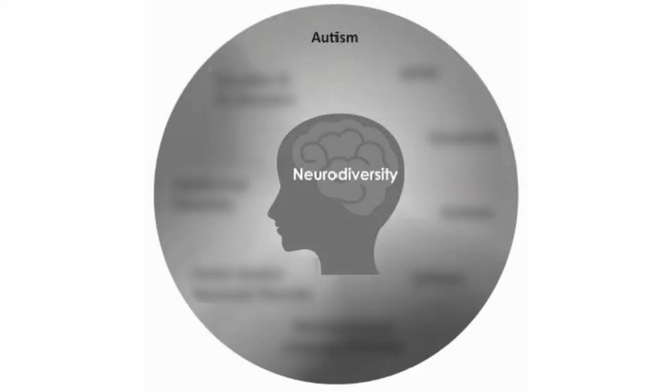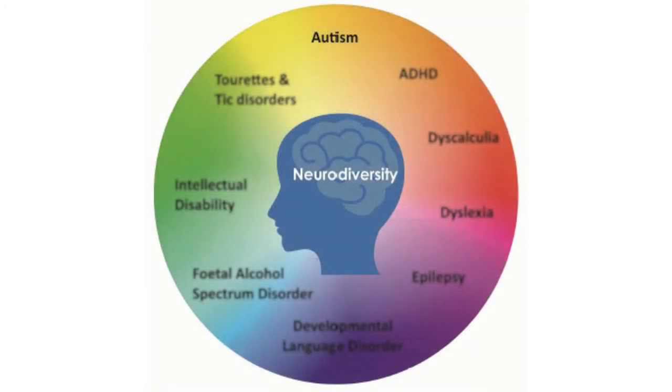Originally, the term neurodivergent, coined by Judy Singer, was directly related to people who have autism. Since then, the term has broadened to more groups of people. We will cover a few of those groups with basic descriptions. Because the idea of neurodivergence has grown so much, you need to understand that neurodivergence can manifest in so many different ways.